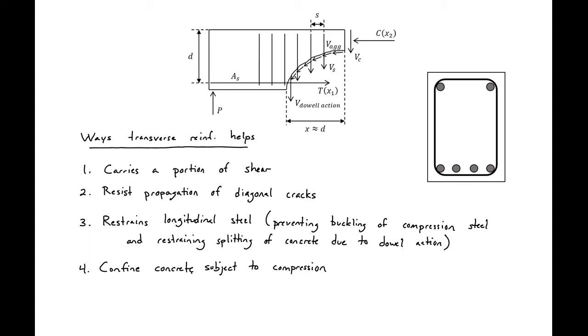I next want to talk about other ways that transverse reinforcement helps our reinforced concrete beam behavior. First, it will carry a portion of the shear strength which we saw in the previous slide. Next, it will resist the propagation of diagonal cracks. As our crack intersection occurs and starts to develop, our shear reinforcement is going to hold that crack together and minimize the crack width. Minimizing the crack width means we'll be able to count on our aggregate interlock component of our concrete contribution to shear.